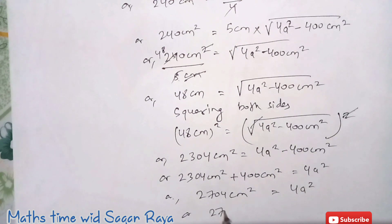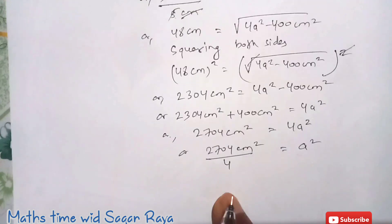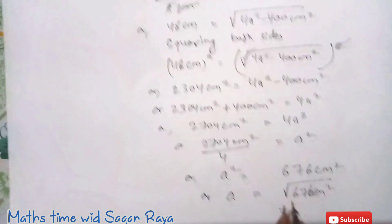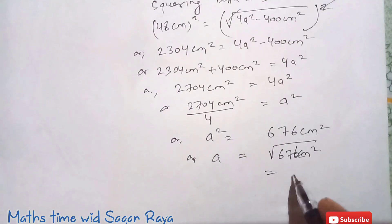This 4 can be brought down and then if you just divide this you will get a square equals to 676 cm square.